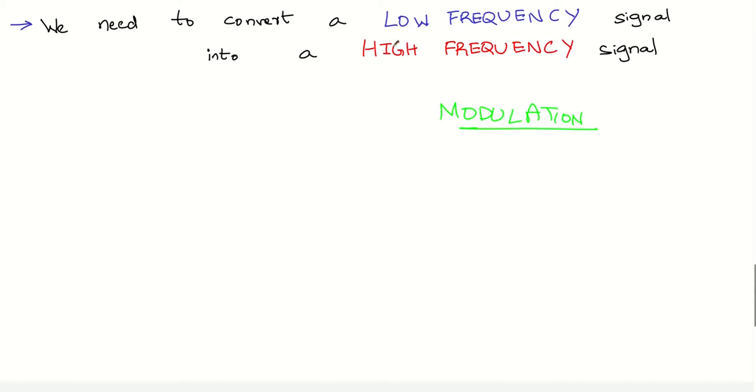We do it before transmitting the signal into the channel. Now, why do we need to modulate a signal before transmitting it? What is the need for modulation? Let us just look at a few points.